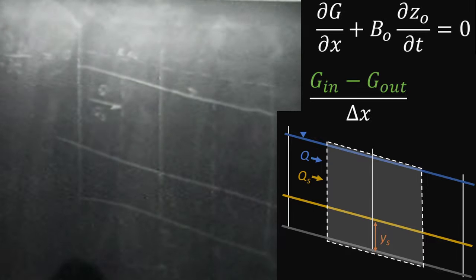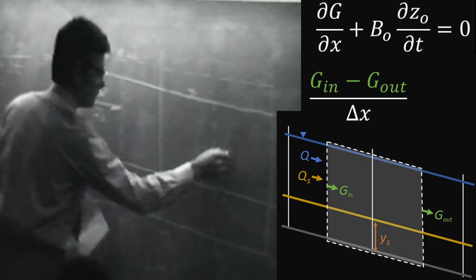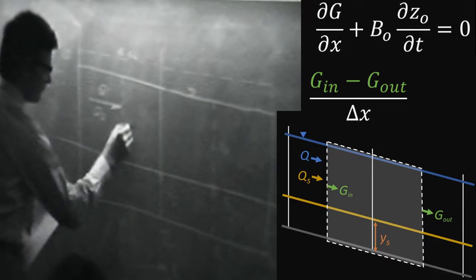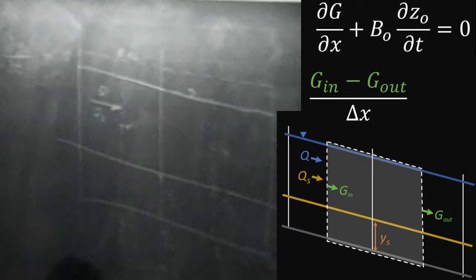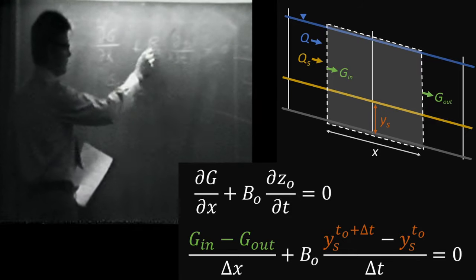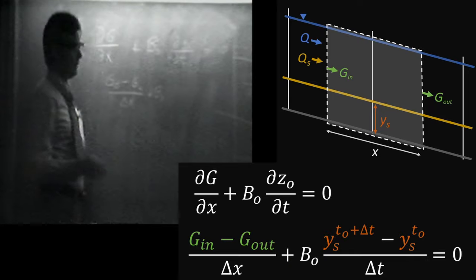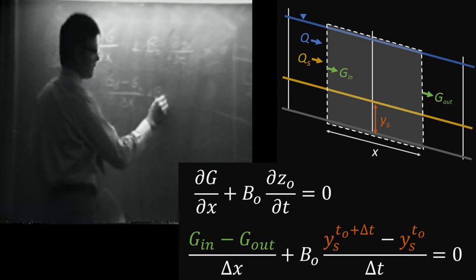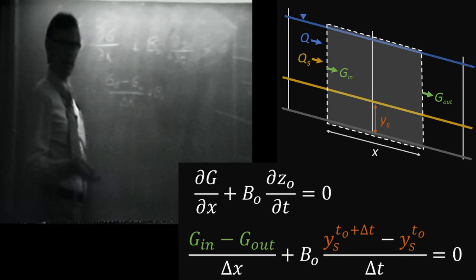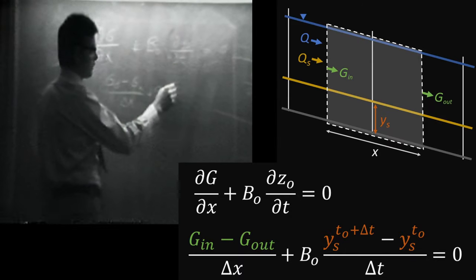G, or the rate of change of G with respect to X, becomes G of the outflow here minus G of the inflow, divided by delta X, which is the total distance here. If G just represents the width of the channel at cross-section two, we can write it directly.